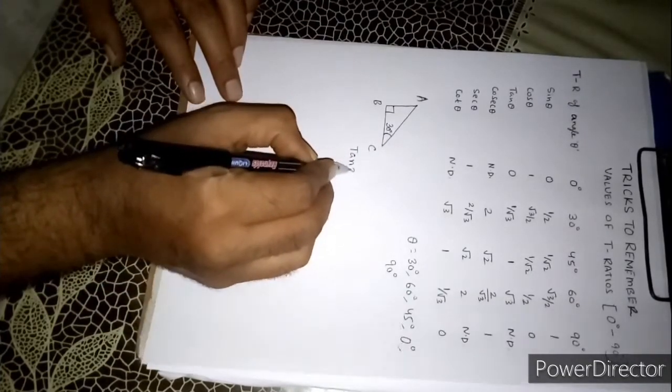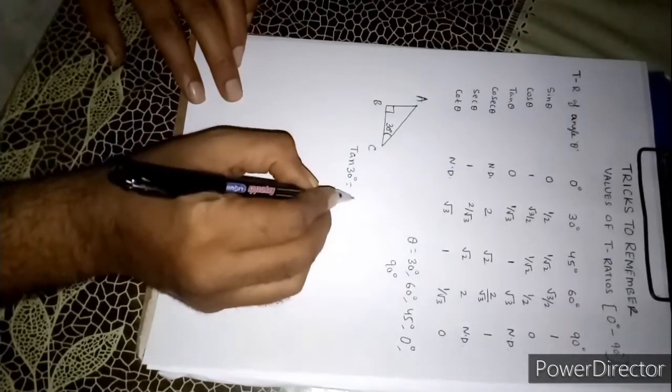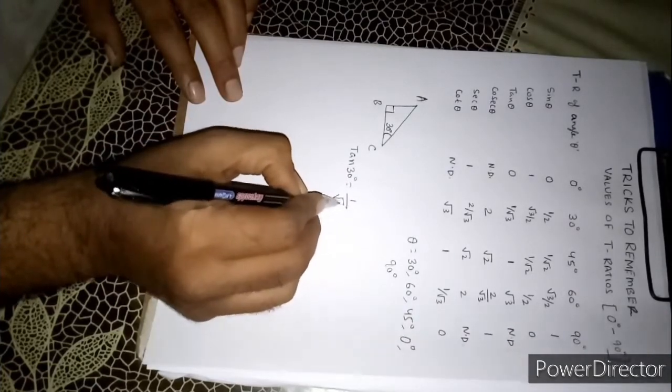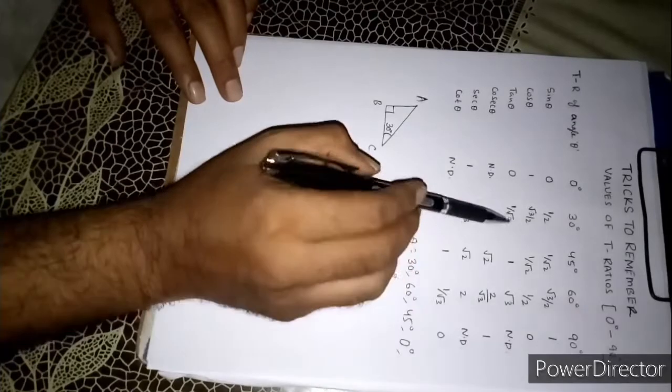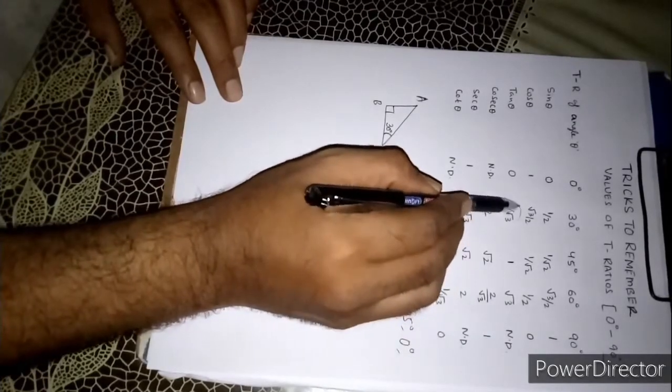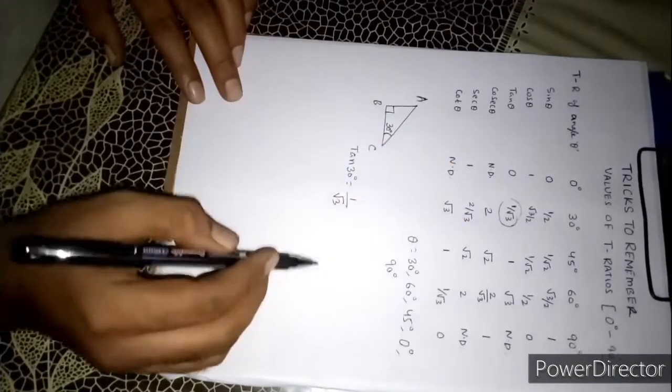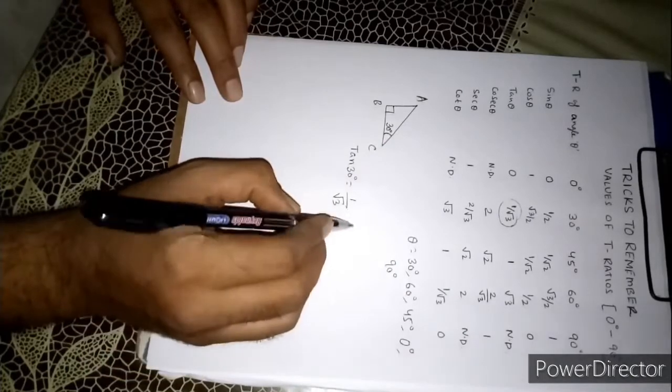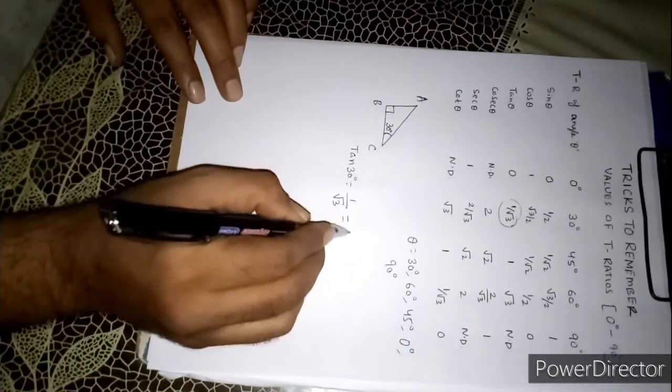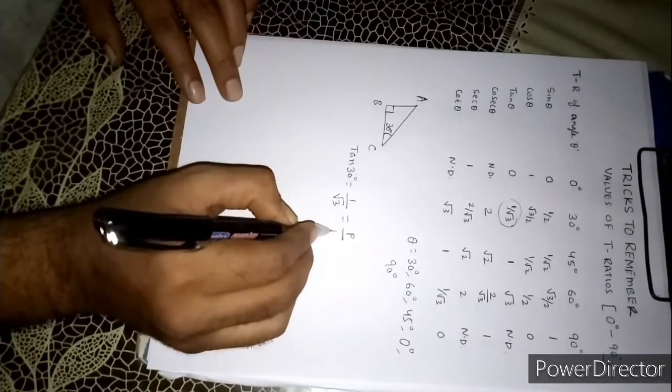If I know that tan 30, tan 30 means what? 1 by root over 3. Here you can get that tan 30 is 1 by root 3. Now tan theta means what? Perpendicular by base.